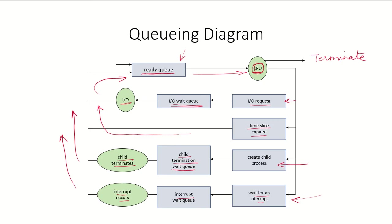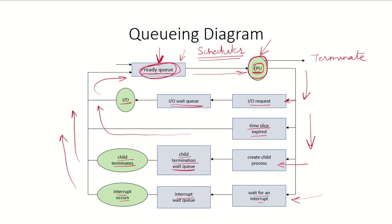When one process goes for some I/O request or other event, the CPU will be allocated to another process from the ready queue by the scheduler. It is the scheduler's task to ensure the CPU is never idle and is always allocated to one of the processes in the ready queue. When one process leaves and another comes in, this whole thing is referred to as a context switch, which will be covered in more detail in the next lecture.